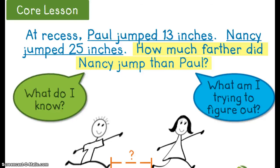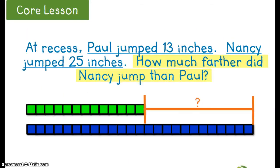So now I take a look at what information I'm given to help me solve it. At recess, Paul jumped 13 inches. Nancy jumped 25 inches. The 13 inches that Paul jumped is indicated here with the green tiles.